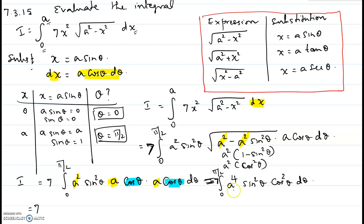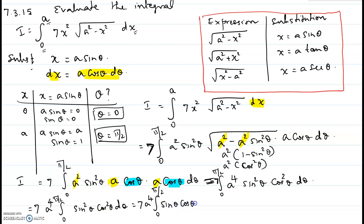So the integral becomes 7 times a⁴ integral from 0 to π/2 of sin²θ cos²θ dθ. We can write sin²θ cos²θ as (sin θ cos θ)², and using the identity sin(2θ) = 2 sin θ cos θ, we get sin θ cos θ = sin(2θ)/2. So this becomes (sin(2θ)/2)² inside the integral.